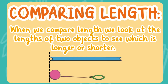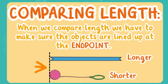So what is comparing length? When we compare length, we look at the length of two objects to see which is longer and shorter. Let's take a look at these two objects down below — we have a ribbon and a balloon toy. When we compare length, we have to make sure the objects are lined up at the end point. There's an arrow pointing to the end point. We can see that the ribbon is longer and the balloon toy is shorter because they are lined up at the end point.